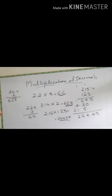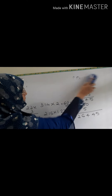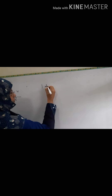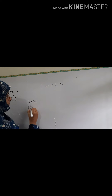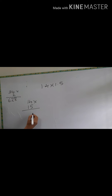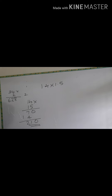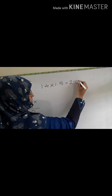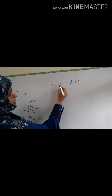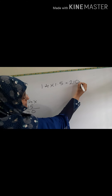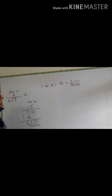You want another example? Take 1.4 into 1.5. You should multiply 14 into 15. 14 into 15: 5 into 4 is 20, carry 1 — giving 75, then 1 into 4 is 4, 1 into 1 is 1. So the product is 210. Where will you insert the decimal point? Here 1 digit after decimal, here also 1 digit, so total 2 digits. From the right side, count 1, 2. So the answer is 2.10.